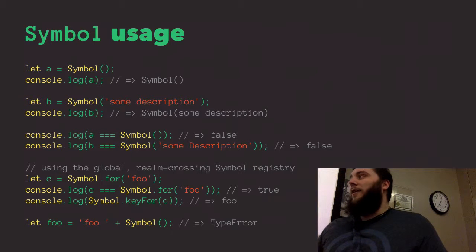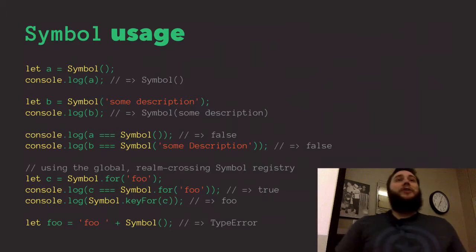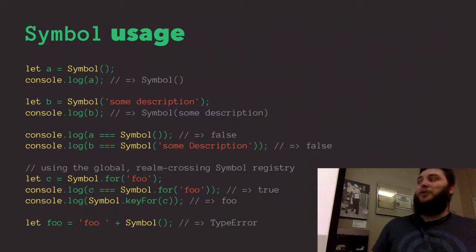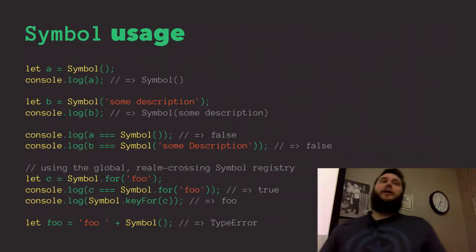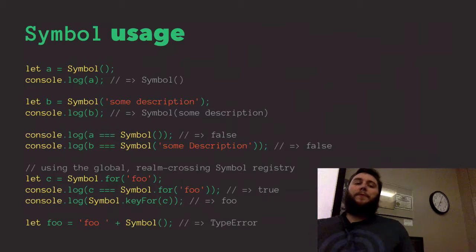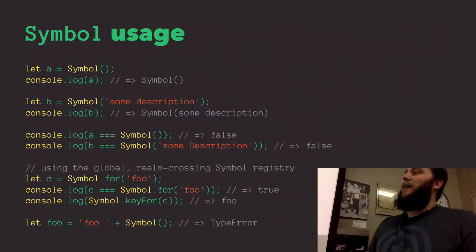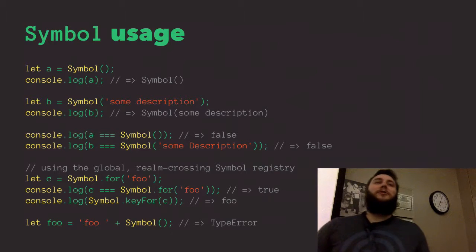There's one other method: Symbol.keyFor — you pass in a symbol and it gives back the tag you created. In this case it would give back 'foo' for C. And if you try to coerce a symbol into something else — for example, concatenating it to a string — you get a TypeError. That's symbols in a nutshell.